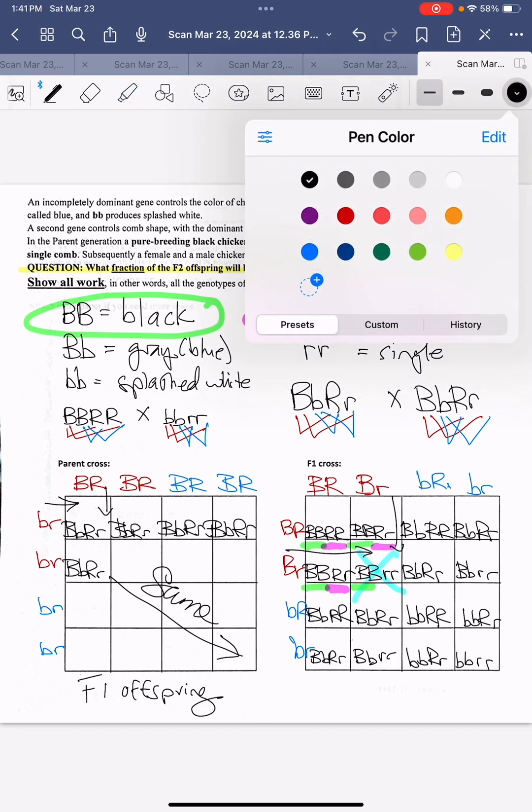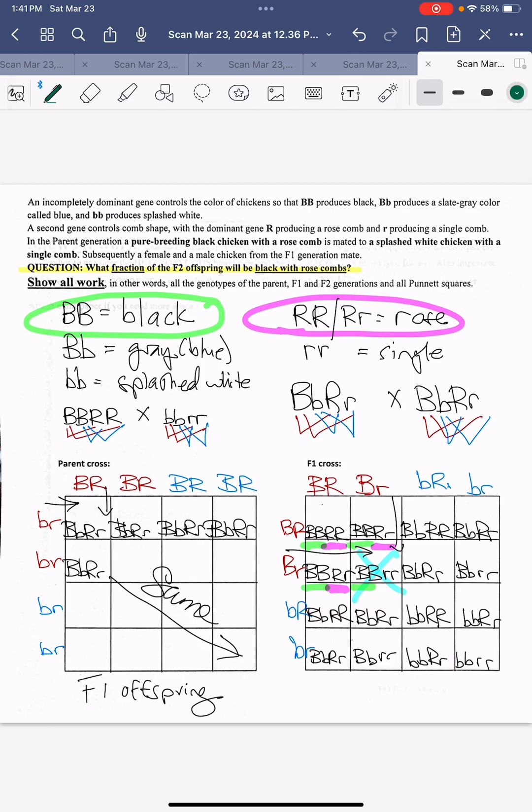Therefore, our answer is going to include this one here, this one here, and this one here. The three that will start. Three out of 16 chickens will be black with rose comb.